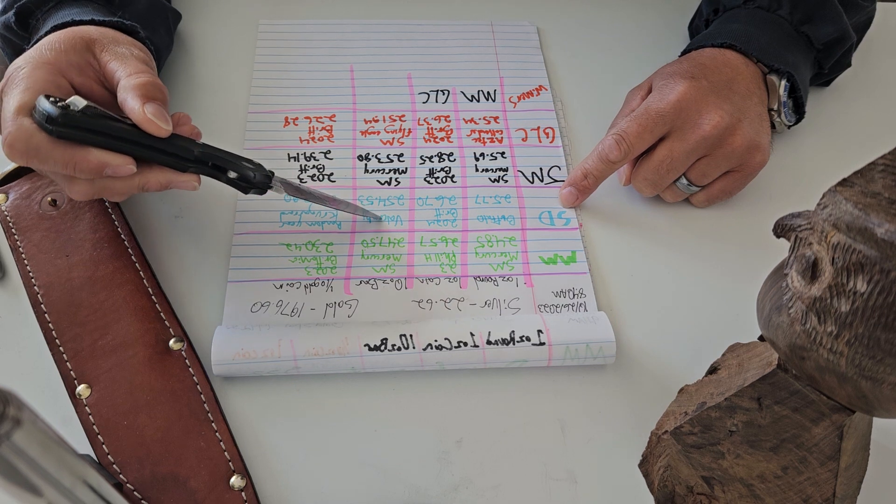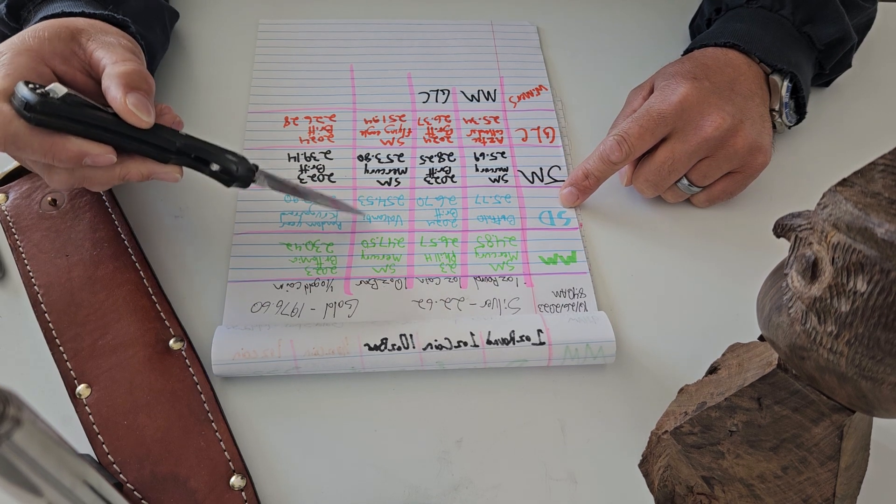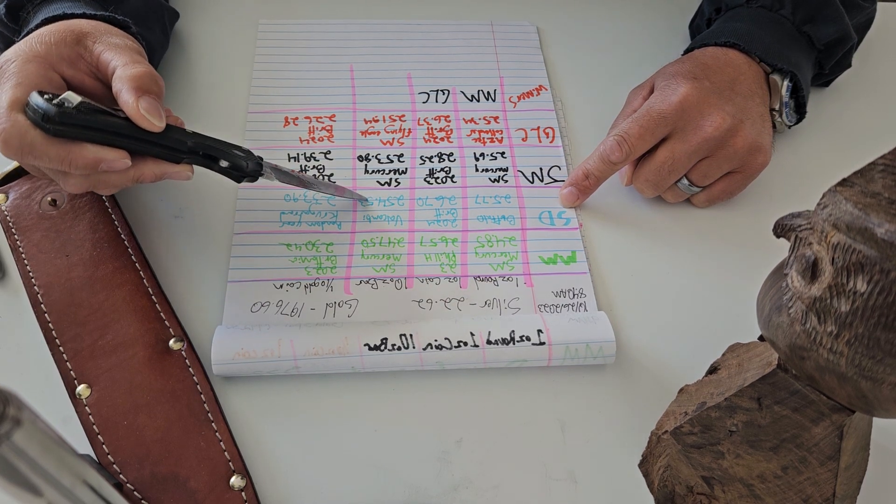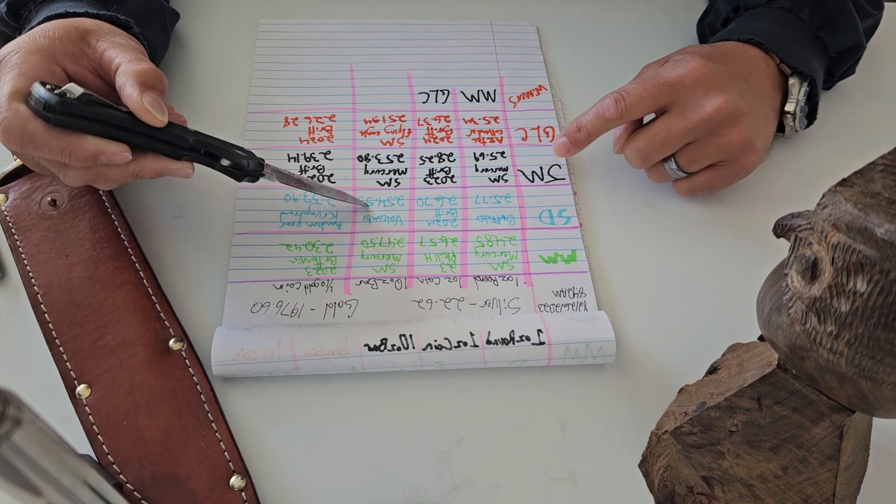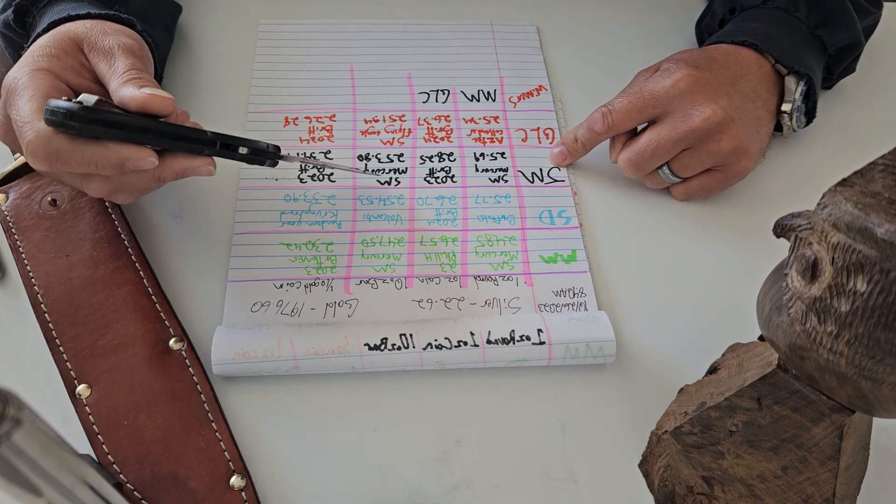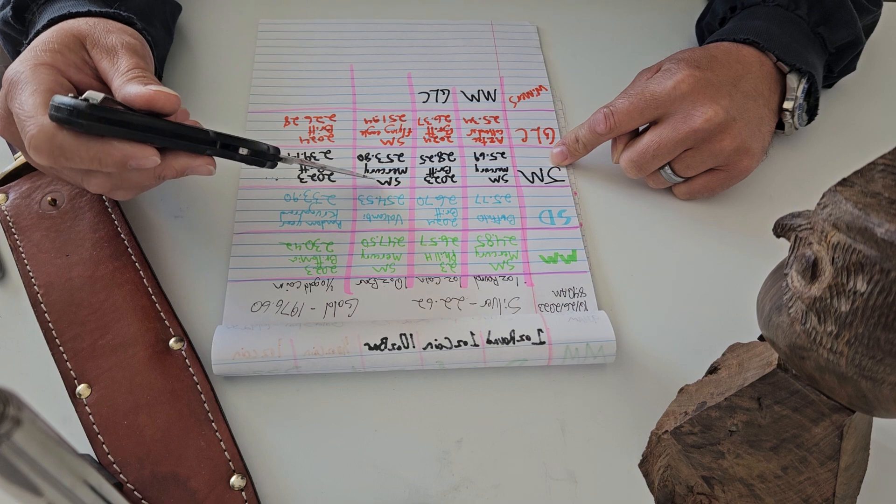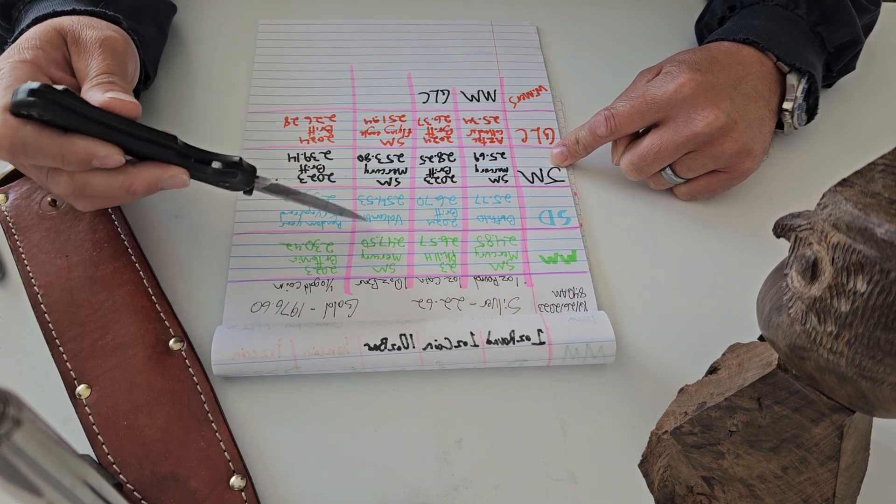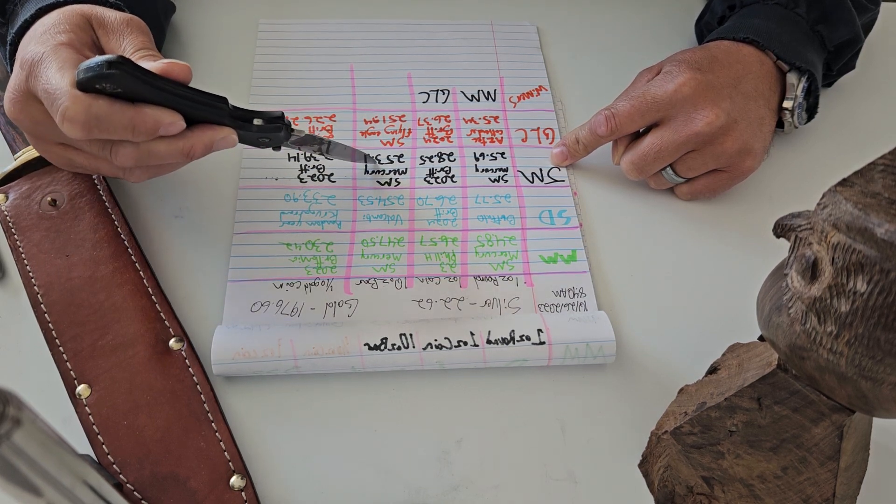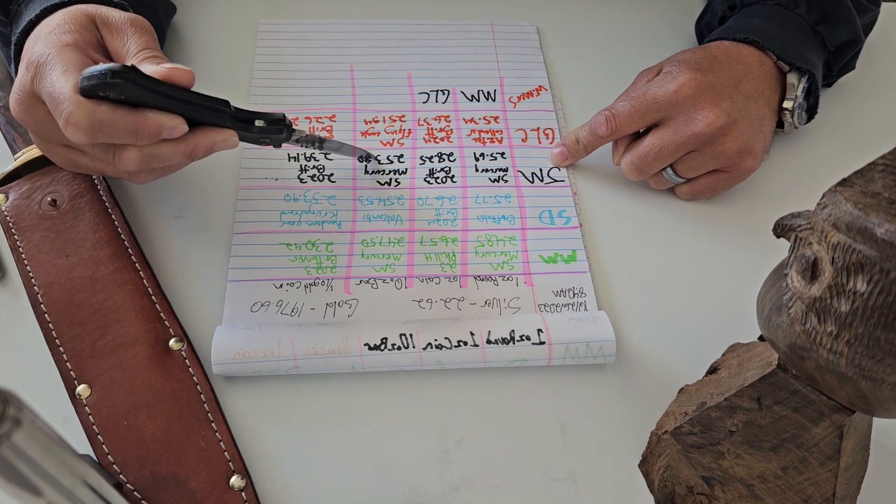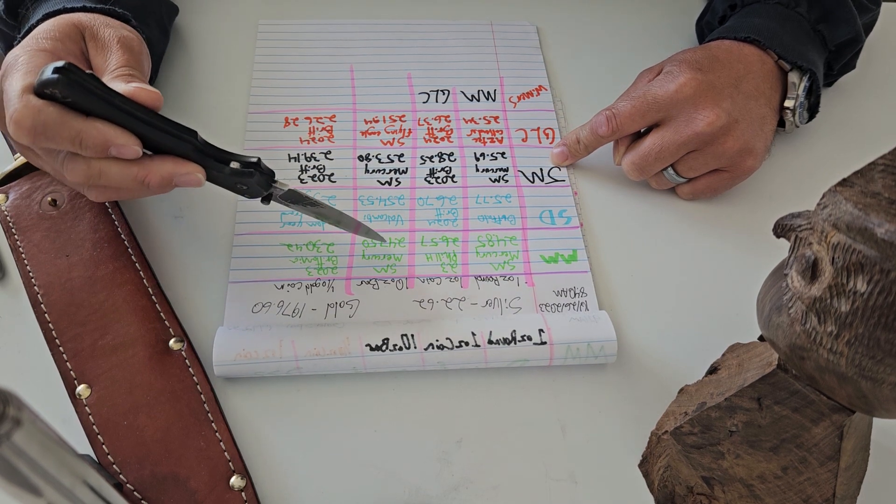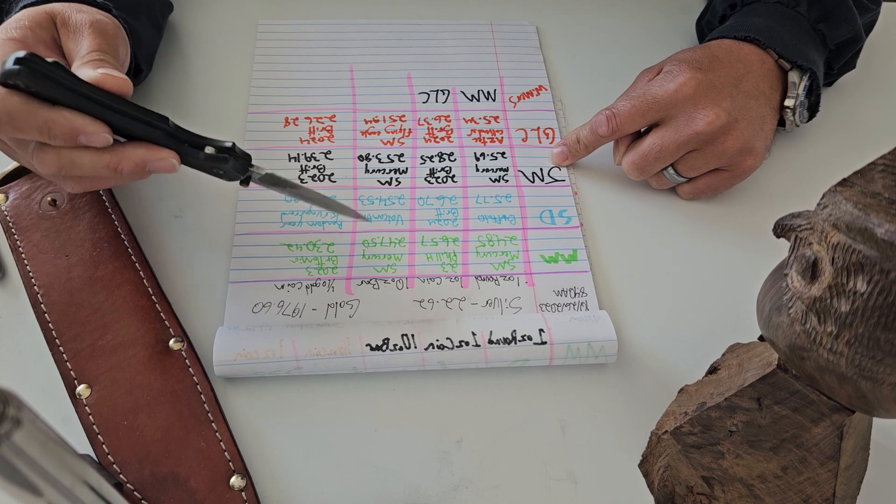Going down to SD Bullion, they have the Valcambi bars. They are $254.53. That's their lowest 10-ounce bar on their website. JM Bullion has the Sunshine Mint Mercury bars. Again, a little bit more, a little price difference there for $253.80 versus Monument Metals for $247.50 for the same exact product.